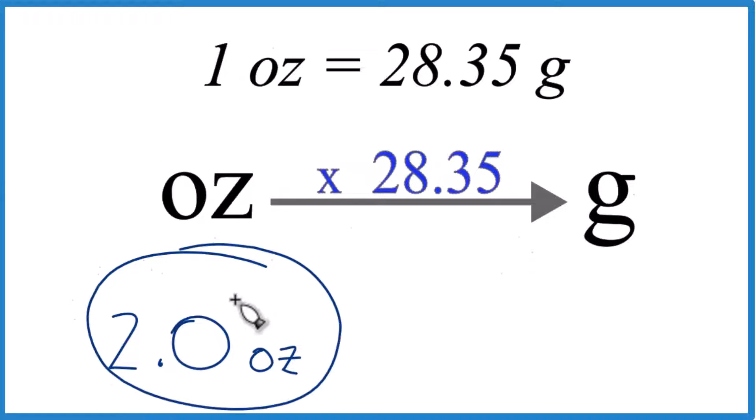Let's convert two ounces to grams. Here we'll have 2.0 ounces. We want to get that in grams. One ounce equals 28.35 grams. That's what we call a conversion factor. You need to know this if you want to convert from ounces to grams.